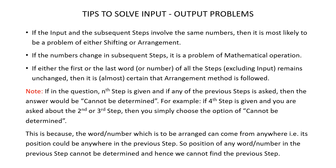This is because the word or number which is to be arranged can come from anywhere — its position could be anywhere in the previous step. So the position of any word or number in the previous step cannot be determined, and hence we cannot find the previous step. So whenever the nth step is given and any of the previous steps is asked, your answer should always be 'cannot be determined'.